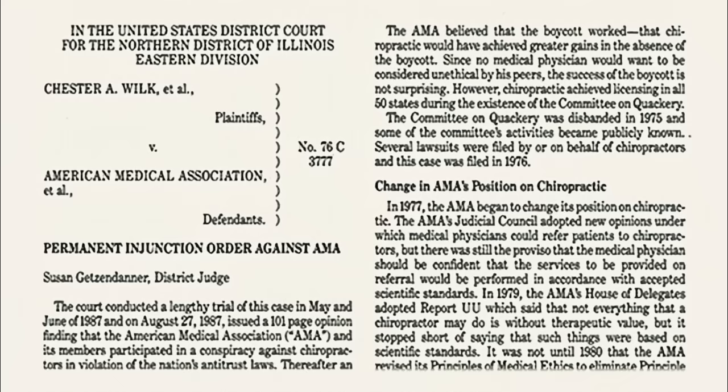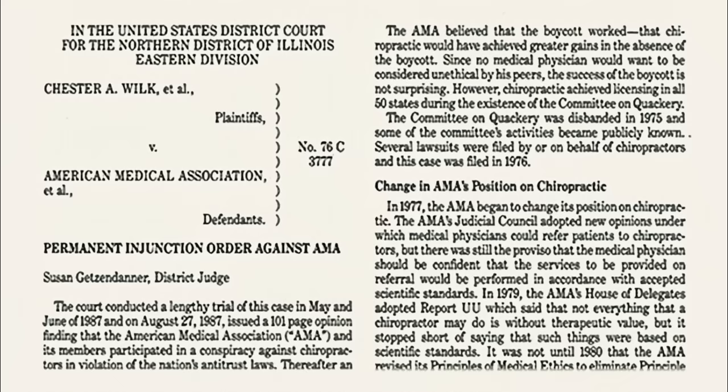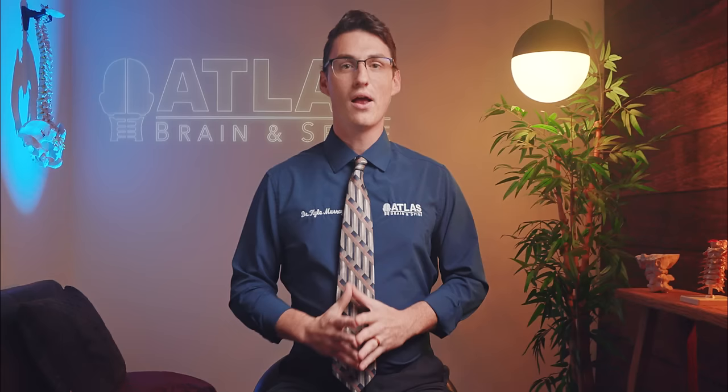Chapter 4: The Impact — Shaping Chiropractic's Future. The weight of this evidence, coupled with extensive legal arguments, led to a historic verdict in 1987. The court found that the AMA and other medical organizations had indeed engaged in a conspiracy against chiropractic care. This landmark decision prohibited the AMA from continuing its anti-competitive practices and vindicated chiropractors in the long-standing battle for recognition and legitimacy. Perhaps the most immediate and enduring impact was the enhanced legitimacy of chiropractic care. The trial exposed the AMA's efforts to discredit chiropractors and elevated chiropractic care to a recognized and respected healthcare discipline.